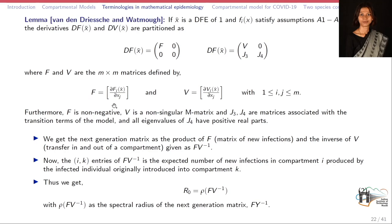We calculate the value of F, which is a non-negative matrix, and V, which is a non-singular matrix. Once we calculate F and V, we get the next generation matrix as the product F times V-inverse. The entries of FV-inverse represent the expected number of new infections in compartment i produced by infected individuals originally introduced into compartment k. Once we obtain this product FV-inverse, we obtain its spectral radius, and that gives us the value of the basic reproduction number R0 — specifically, R0 = rho(FV-inverse).